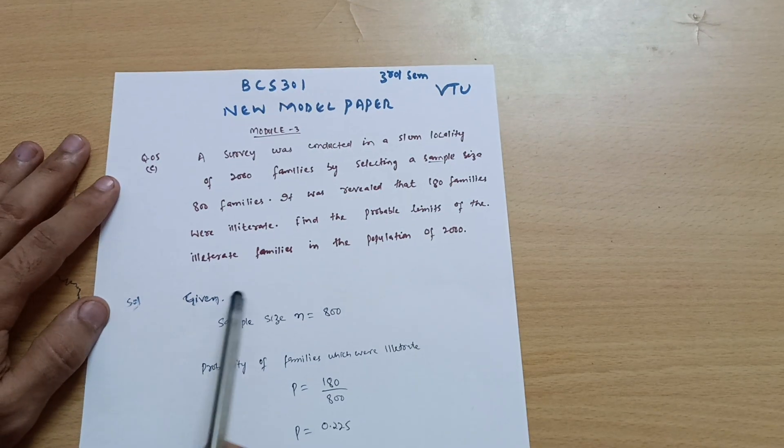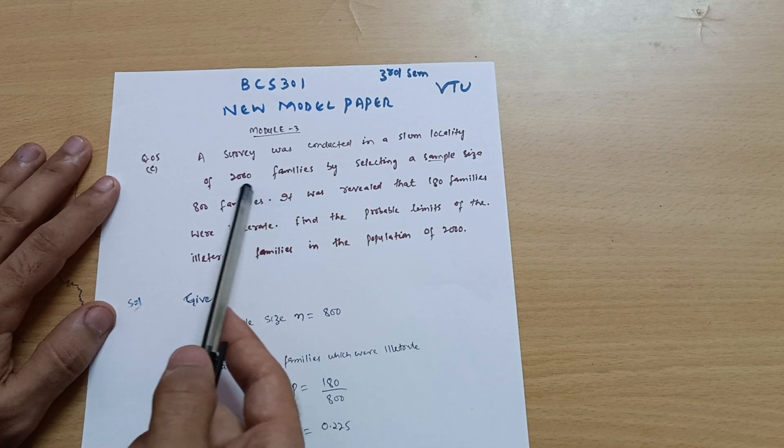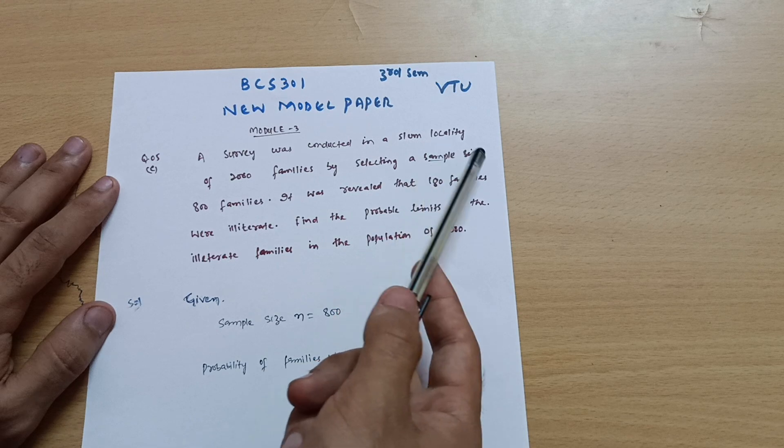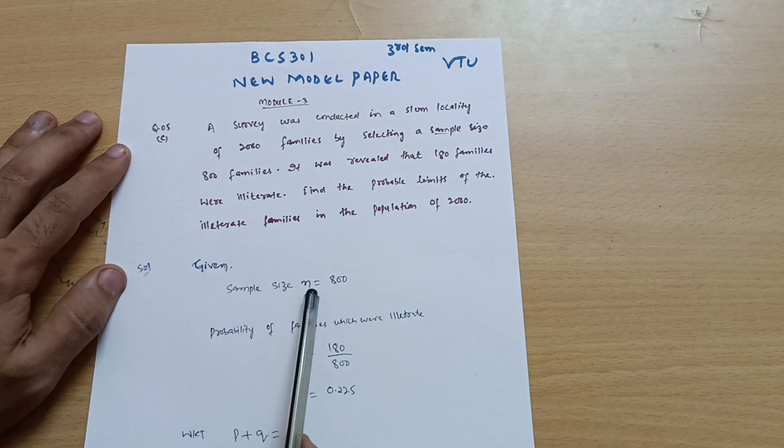While writing down the solution, first of all, how many families are being selected out of 2000? 800 families are being selected. This is the sample size, so it is represented as n. Sample size n is equal to 800.